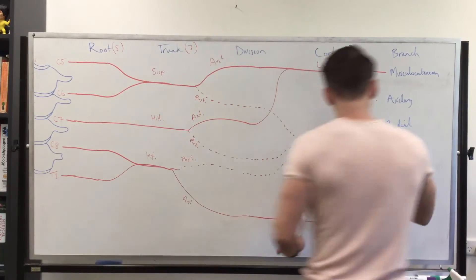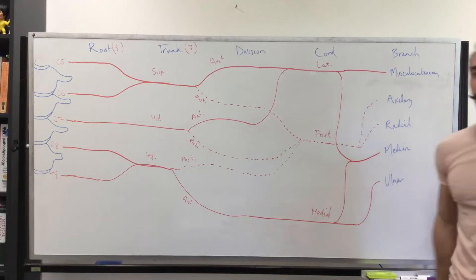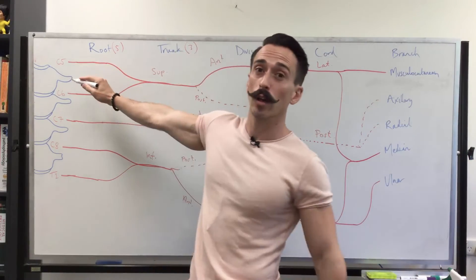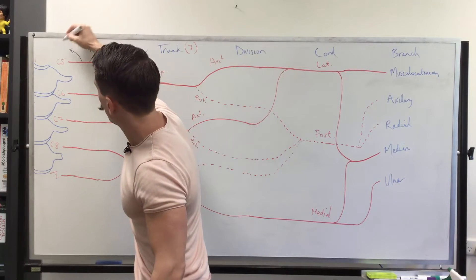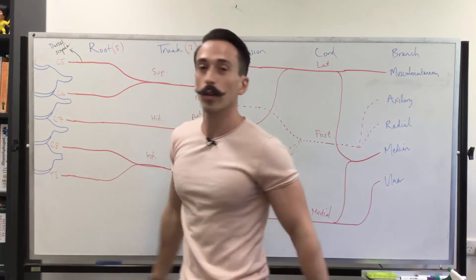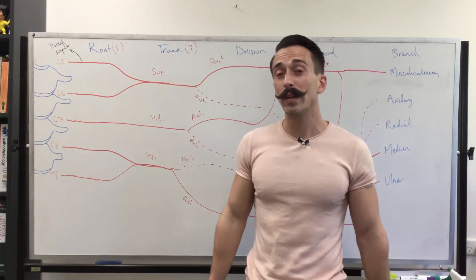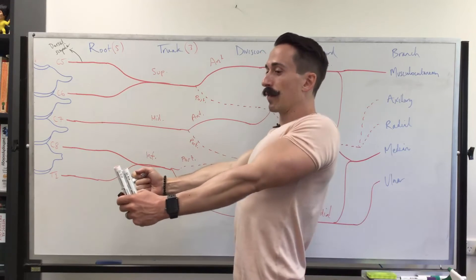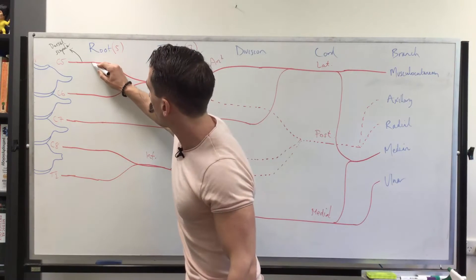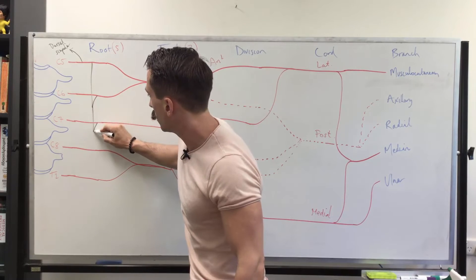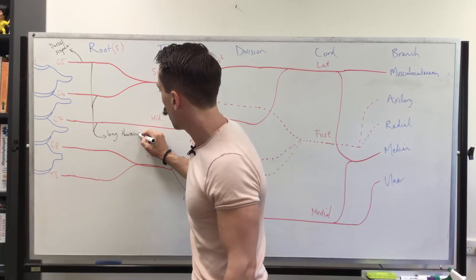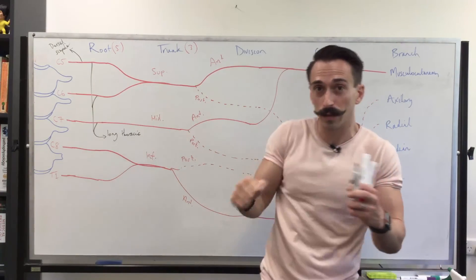Now we've got the branches of the brachial plexus, but we also need to add some other major branches. First, a branch comes off the C5 nerve root called the dorsal scapular nerve, which innervates the rhomboids — rhomboids major, rhomboids minor — and also levator scapulae. There is also a nerve coming from C5, C6, and C7 called the long thoracic nerve, which innervates serratus anterior — the boxer's muscle — for pushing.